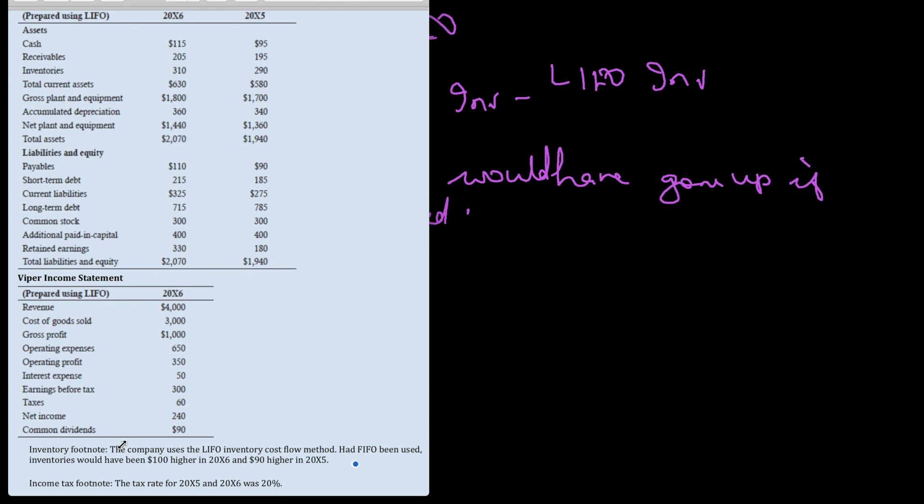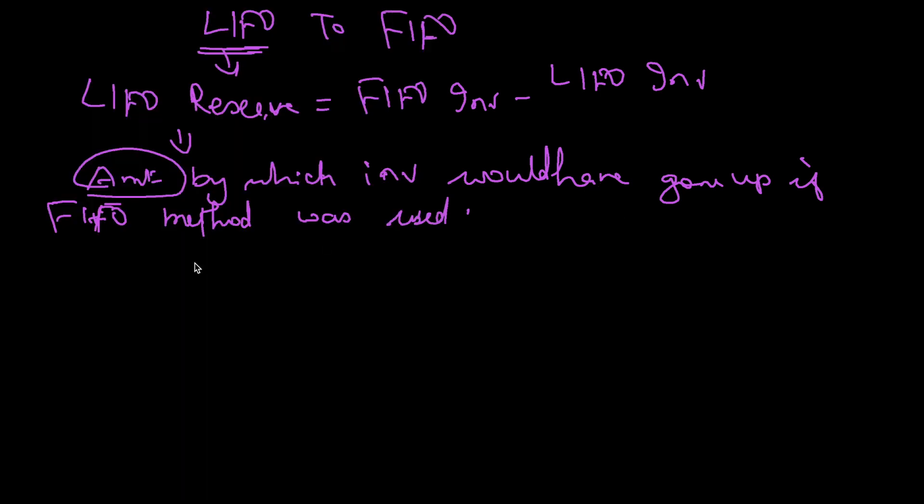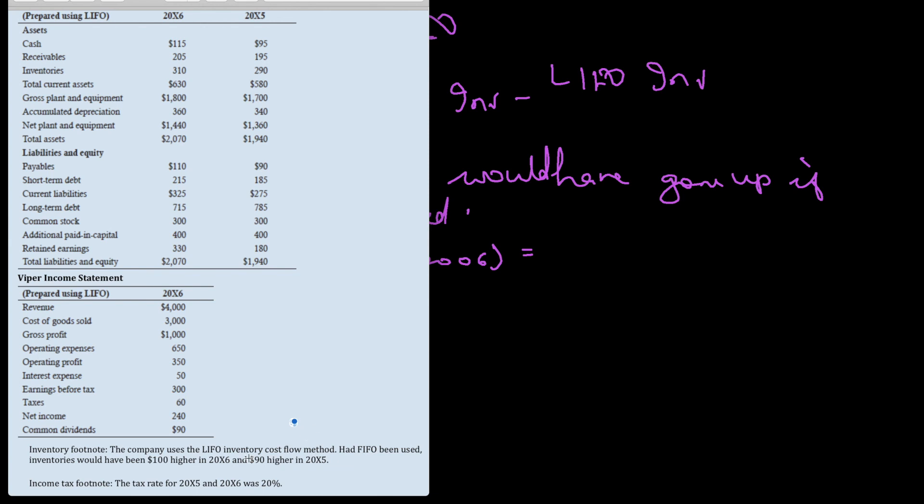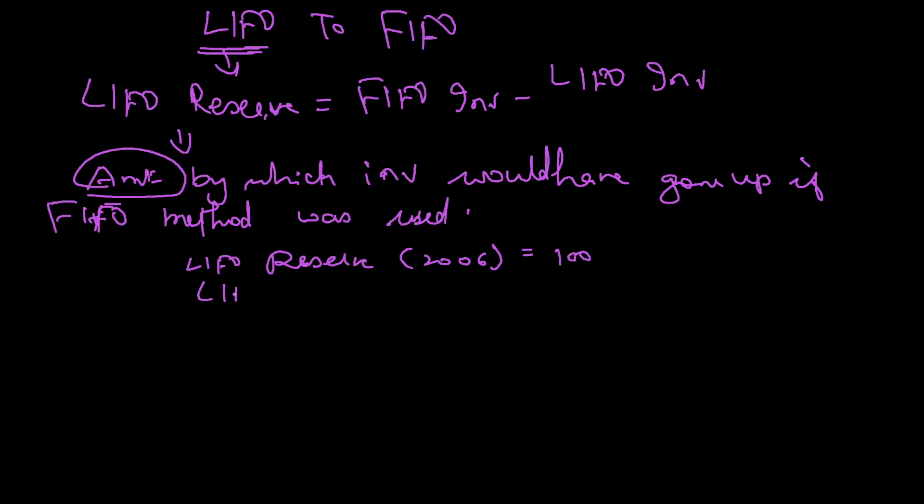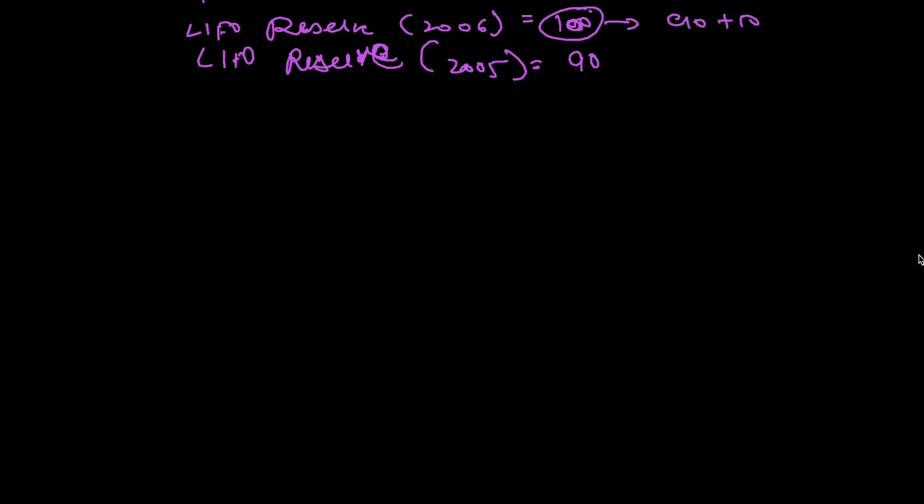That means LIFO reserve for 2006 is 100 and LIFO reserve for 2005 is 90. Only for 2006 it will come to 10, but overall for 2006 it is 100. This comes as 90 plus 10. Now how do I convert from LIFO to FIFO? It includes a very standard process.